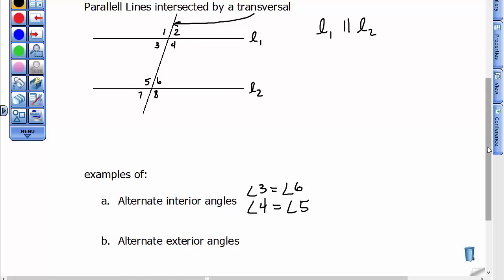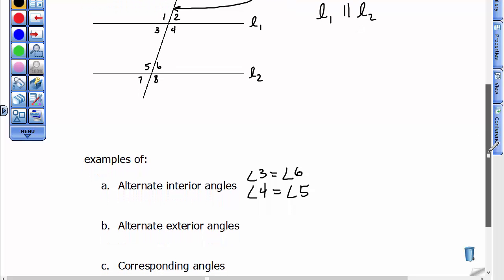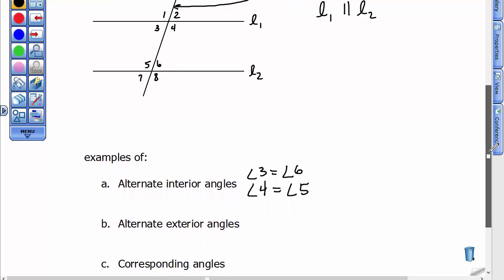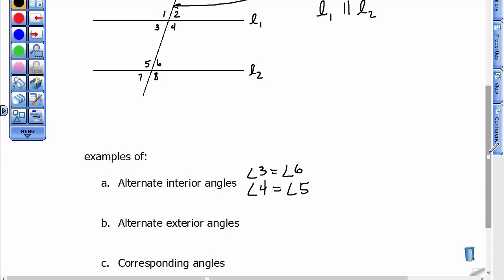Alternate exterior angles are those that are on the outside of the parallel lines and equal to one another. So, that represents angle 1 and angle 8, and angle 2 and angle 7. Those are equal angles. Angle 1 equals angle 8, and they're called alternate exterior. And angle 2 equals angle 7.